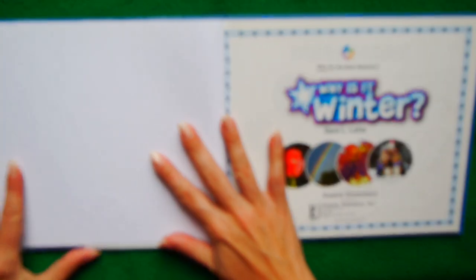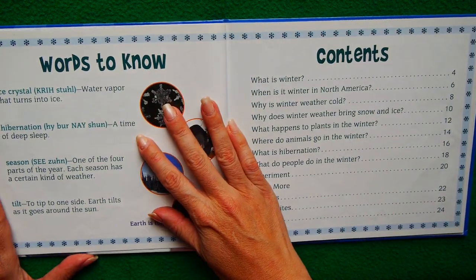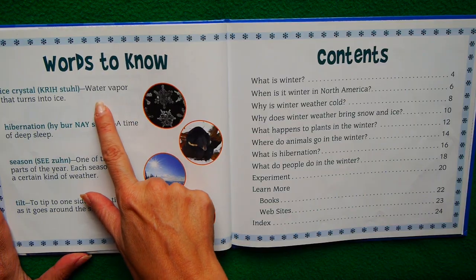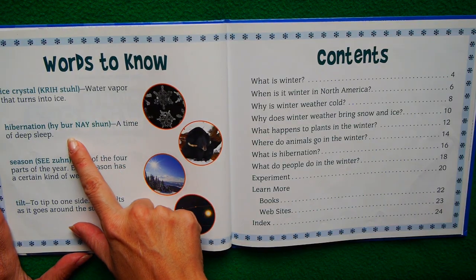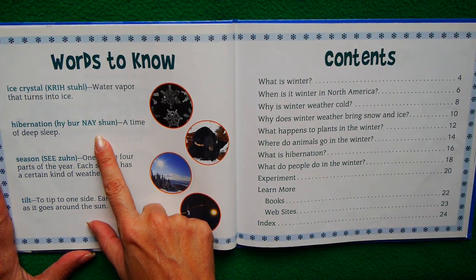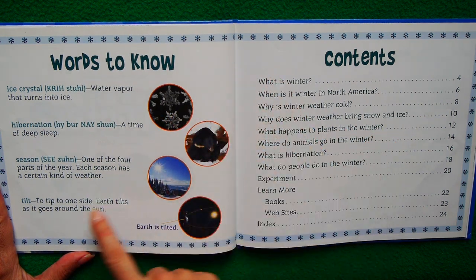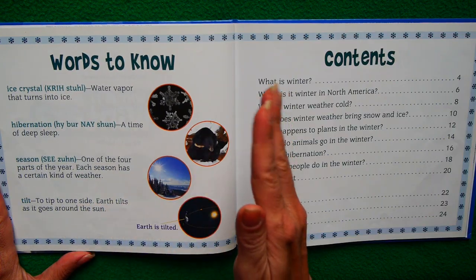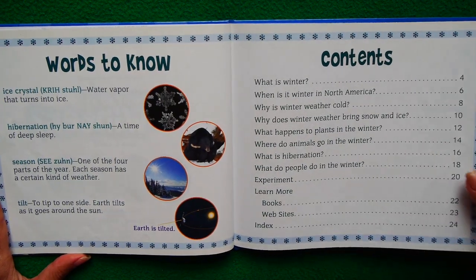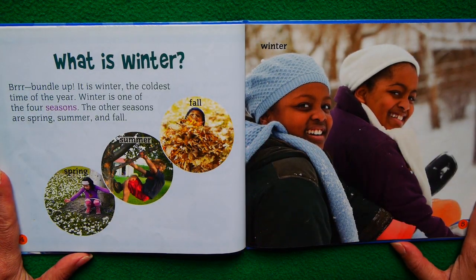For example, some of us prefer only summer. We're just that way. But we don't only get summer, do we? Words to know as we begin. Ice crystals — that's water vapor that turns into ice. Hibernation — a time of deep, deep sleep. Bears like to do that. Certain people like to do that during the winter. Season — you know, spring, summer, winter, fall. Tilt — to tip to one side. And the earth tilts as it goes around the sun. Why did we need to learn all these fancy terms? Well, to understand: what is winter?